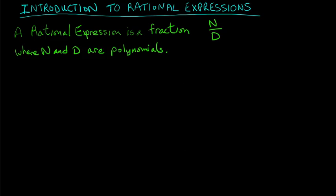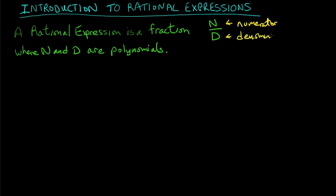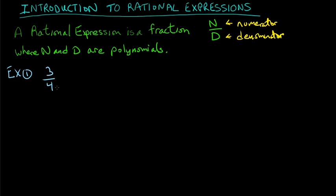We're going to start our introduction to rational expressions. A rational expression is just a fraction — you have a numerator and a denominator. It can't just be any fraction; it has to be a fraction where the numerator and denominator are polynomials. For example, 3 over 4 is a monomial divided by a monomial, so it qualifies as a rational expression.